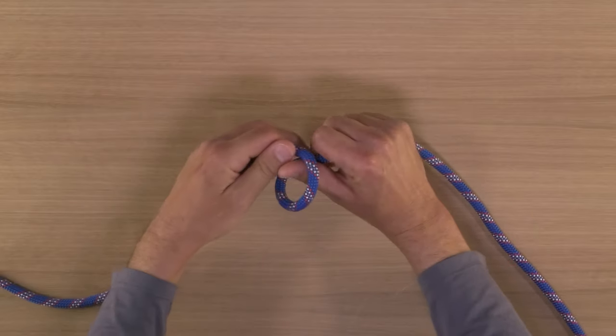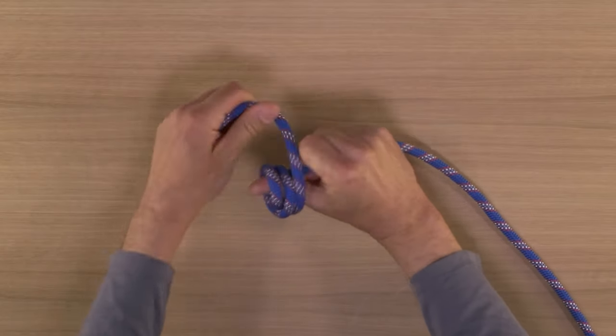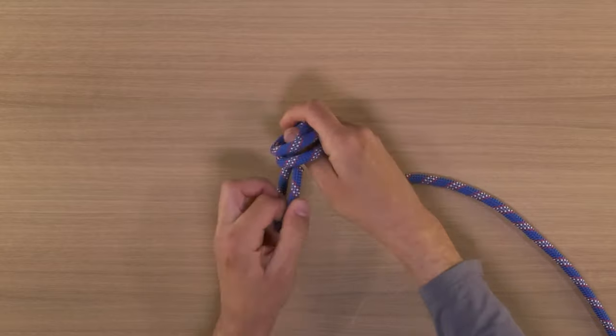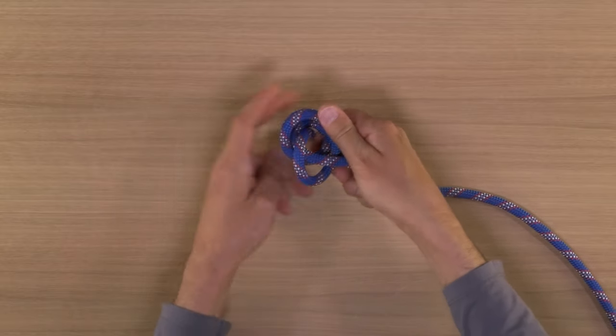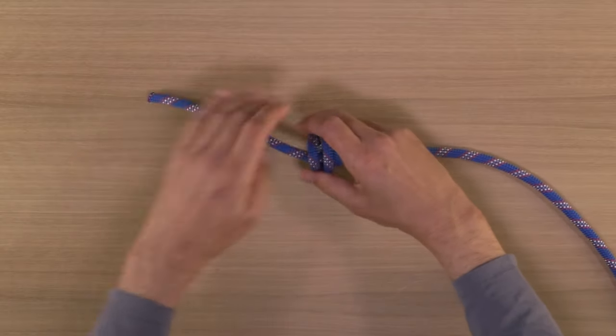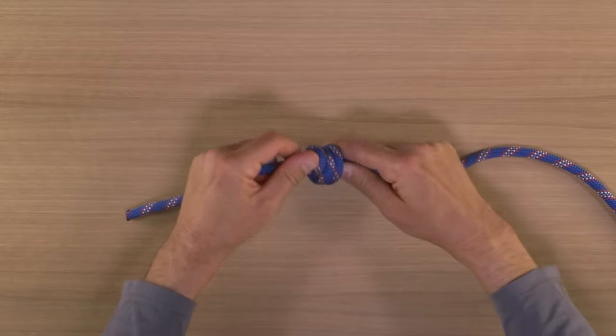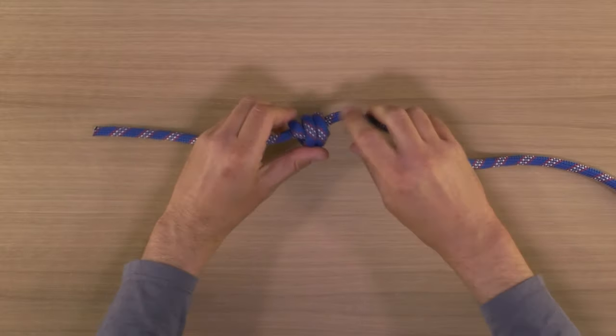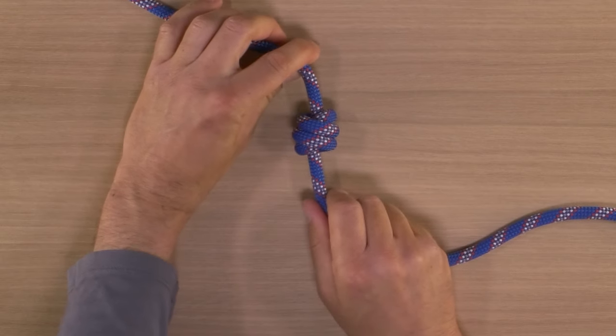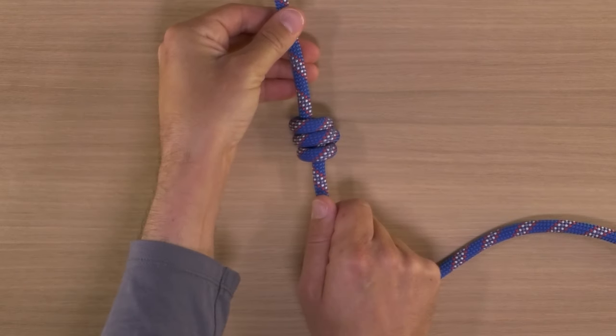You can make a triple overhand, which is just three wraps instead of two. Make sure your wraps go in an upward direction, meaning away from the end of the rope, and then pass the end through all three wraps and dress it neatly. This is a beefier stopper knot, or a backup knot that eats up more material.